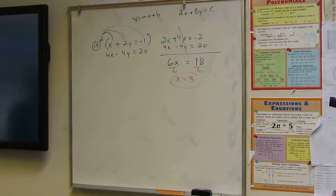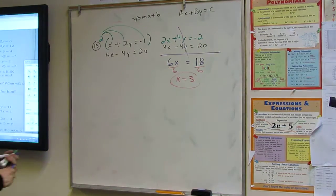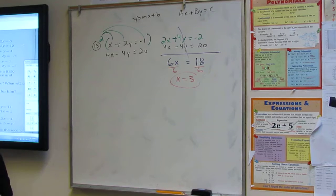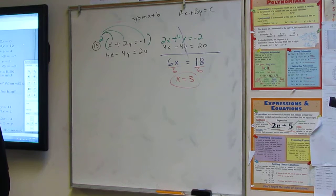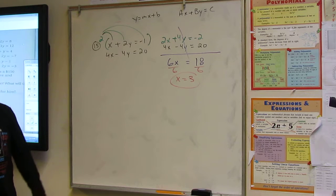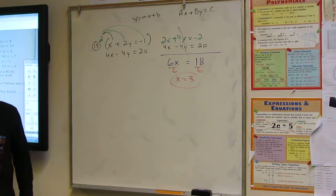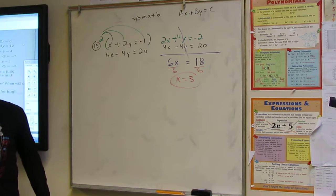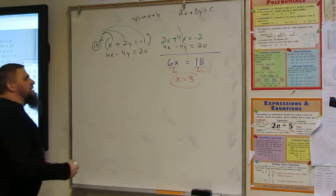Now what do we do with that three? Plug it in. Very good. You want to plug it in to the top or bottom? She likes the bottom. You like the top. I like the top because I want less numbers. I mean, the bottom is fine. We can do the bottom. Let's do the bottom because it's harder.